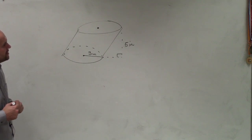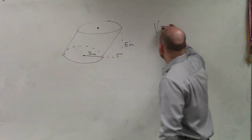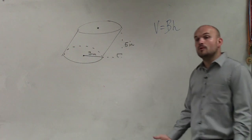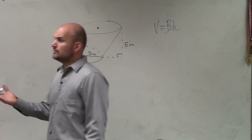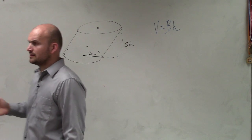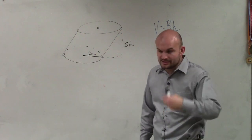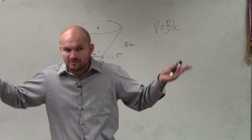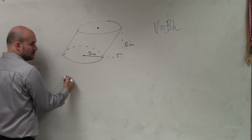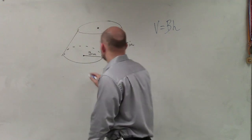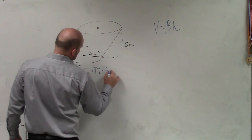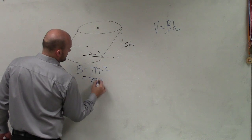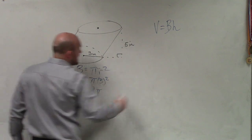When we go ahead and take a look at this, what we simply need to do is find the volume, which is base times height. This is question number eight from the homework last night. All we simply need to do is determine the area of the base and the height. We look at this and we see the base is a circle. To find the area of the base, that equals pi r squared, which in this case r is 3, giving us 9 pi.